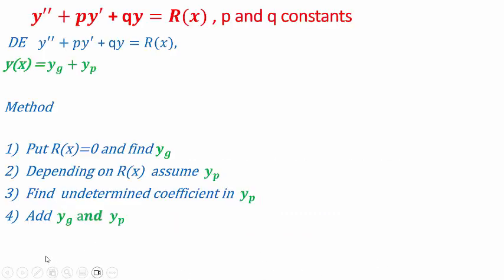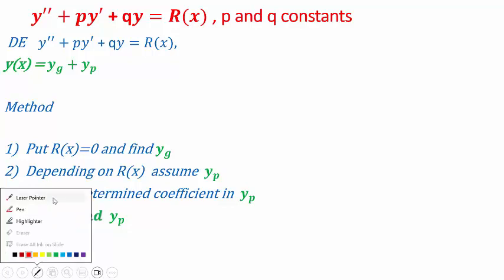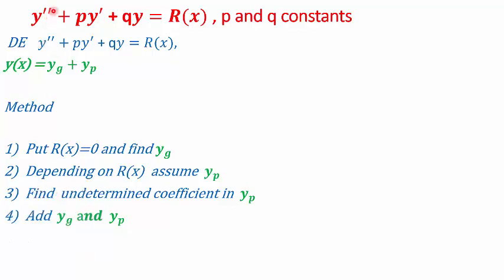So let's begin. What if we are asked to solve a second order linear differential equation y'' + py' + qy = r(x), where p and q are some constants and the right-hand side r(x) is a function of x? To solve such problems, we do it in two steps: we find yg, the general solution, and we find the particular solution yp. We add the two to get a final solution y.